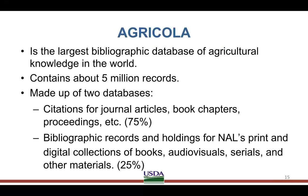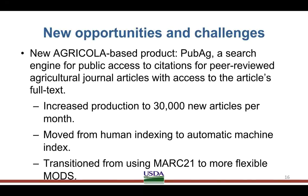We are also the creator and maintainer of Agricola, which stands for Agricultural Online Resources. Agricola is the world's largest bibliographic database of agricultural knowledge, currently carrying over five million records. We have Agricola divided into two databases: our article citation database, which covers journal articles, book chapters, and proceedings — about three-quarters of the Agricola database — and our card catalog, which is our index of print and digital collections made up of MARC-based bibliographic records. Our collection goes back to the 15th century.